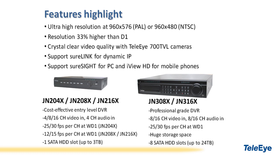For JN204X, the maximum frame rate is 25 or 30fps at WD1 resolution. For the JN200 series, JN204X and JN216X, the frame rate per channel is 12 or 15fps for PAL and NTSC. For JN300 series, JN308X and JN316X, they are designed for professional-grade application and support real-time recording at WD1 resolution.